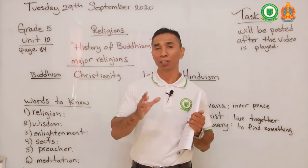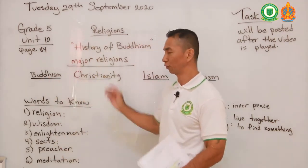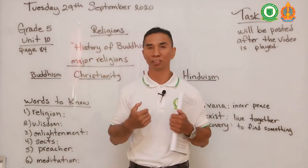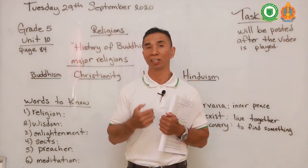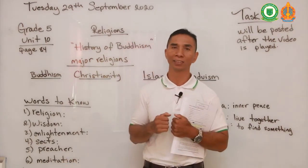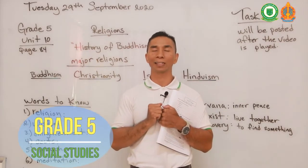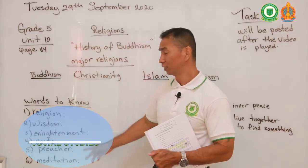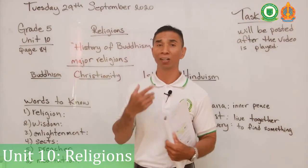A sect means a different set or particular part within each religion. A preacher is someone who comes up to the front and talks to all their followers, like in a sermon. And the word meditation means — for a quick example — to find somewhere quiet, sit down, close your eyes, and find inner peace. Thank you for writing these words down in your book and for our communications on Zoom and on our Telegram page.